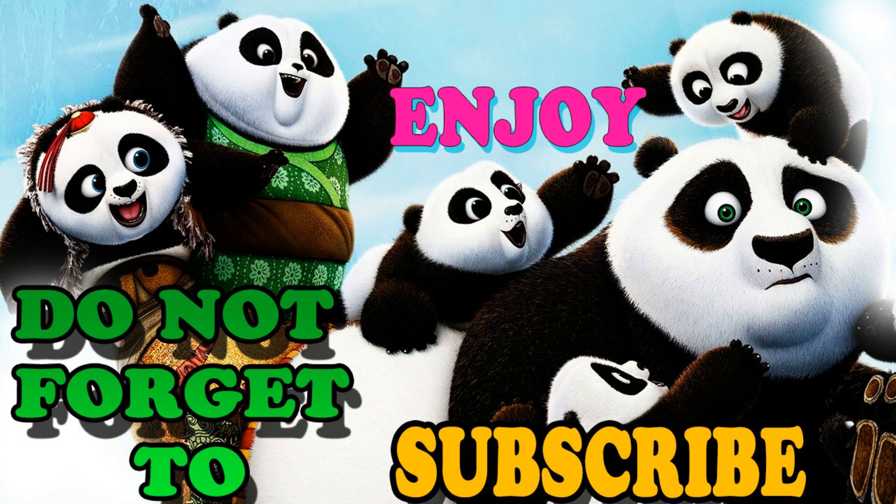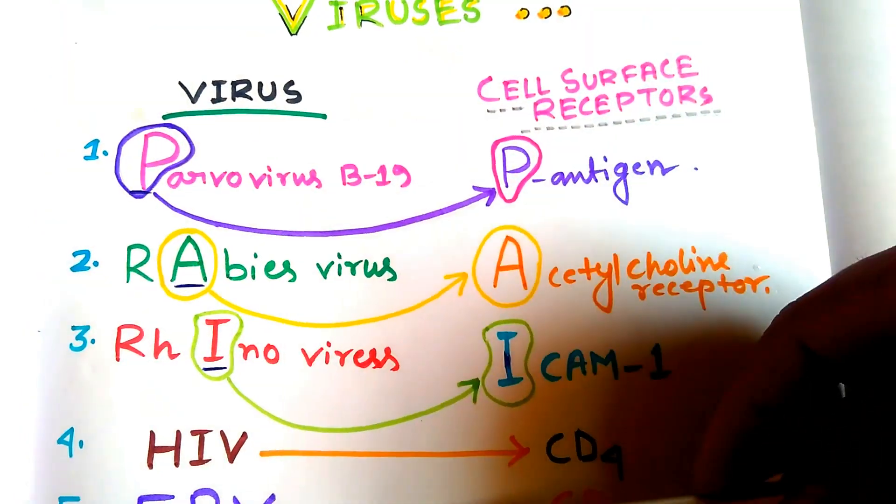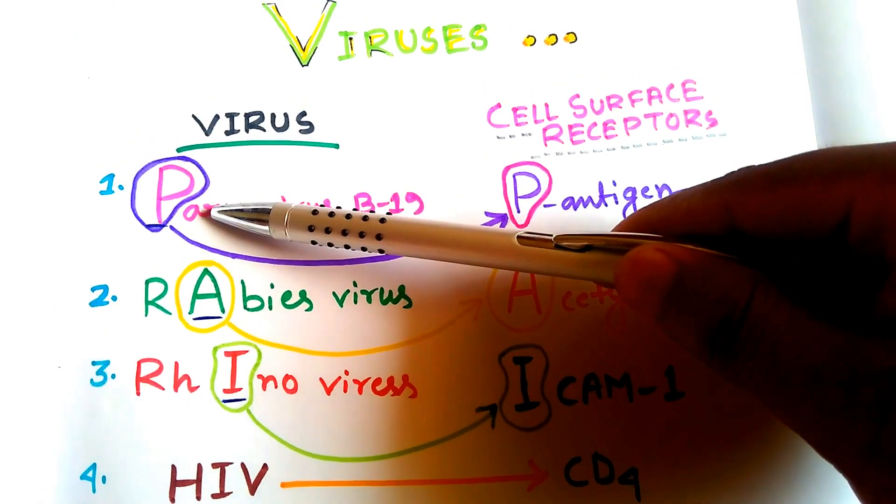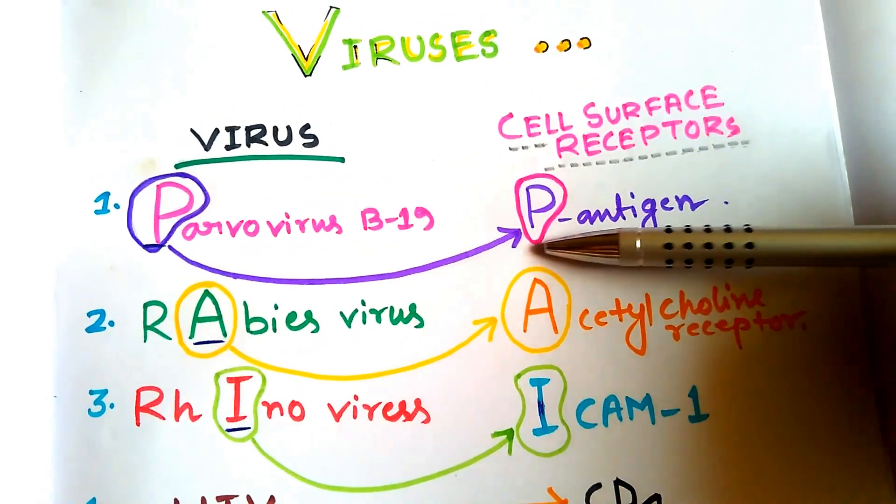Here comes our mnemonic. The viruses are listed and the cell surface receptor side by side. First is Parvovirus: P for P antigen.